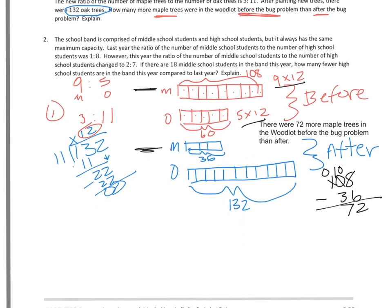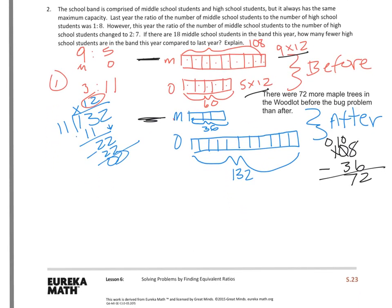Let's take a look at problem 2. The school band is comprised of middle school students and high school students, but it always has the same maximum capacity, meaning the same total amount. That means if I add my units together, they should equal before and after. Just like in my first problem, I had 9 to 5, that equals 14 if I add them. I had 3 to 11, that equals 14. So my ratios for this, I'm going to get two different ratios. They should equal the same number if I add them.